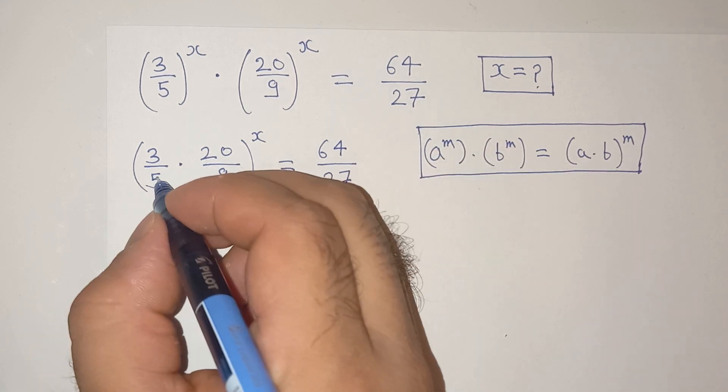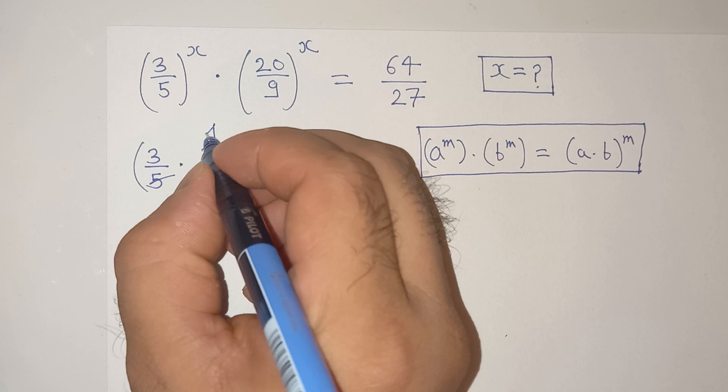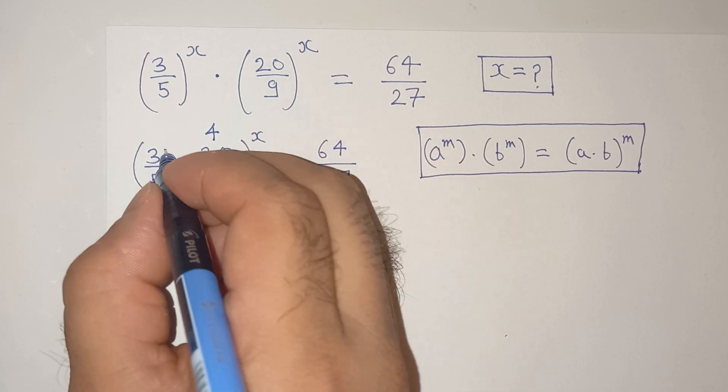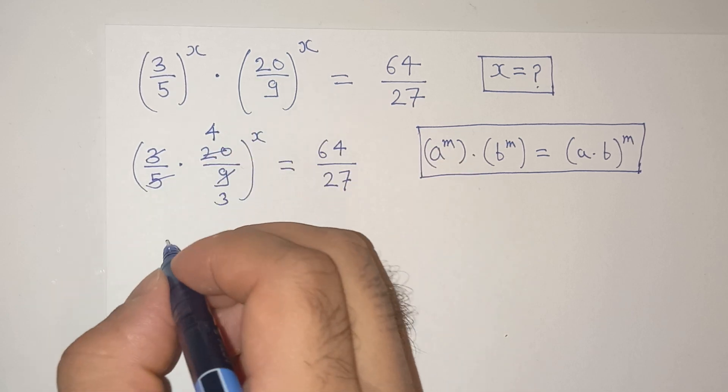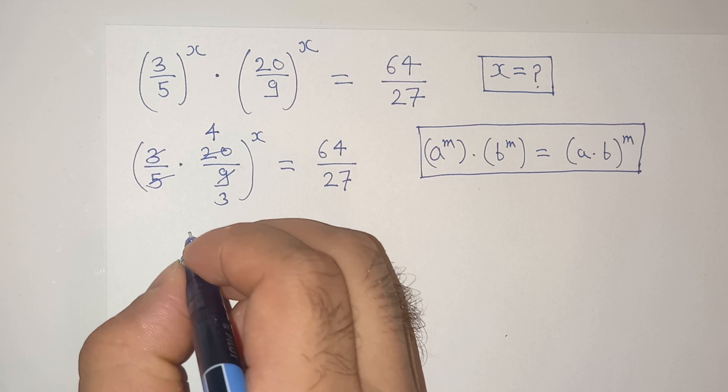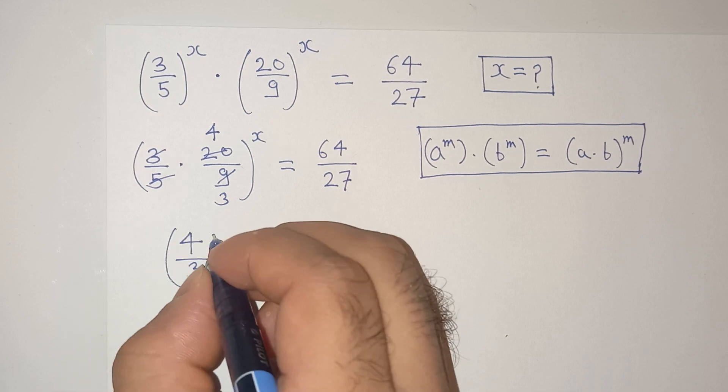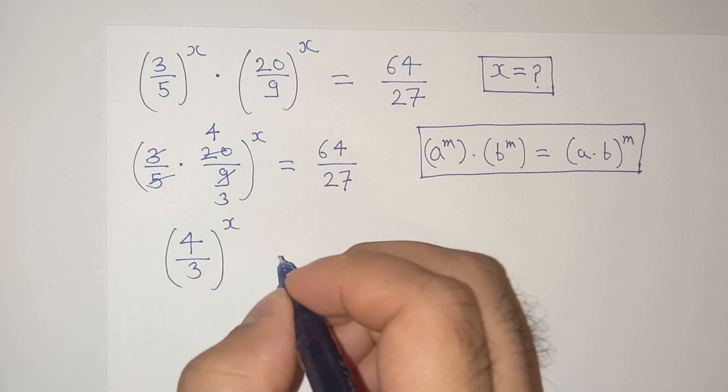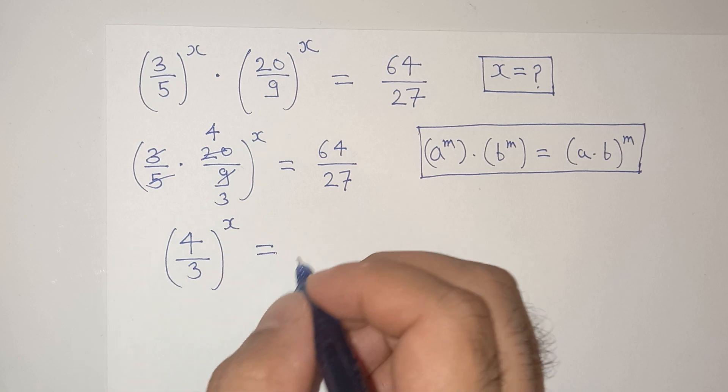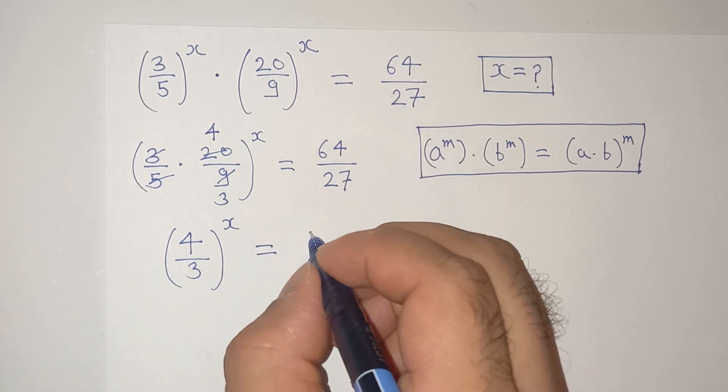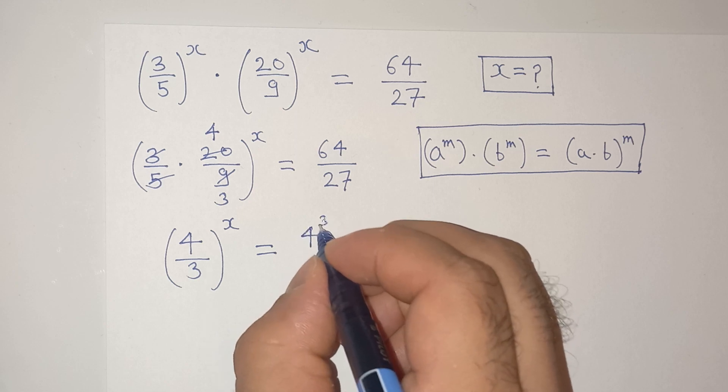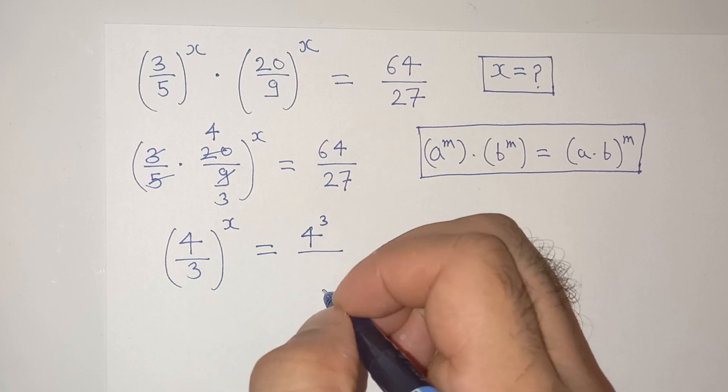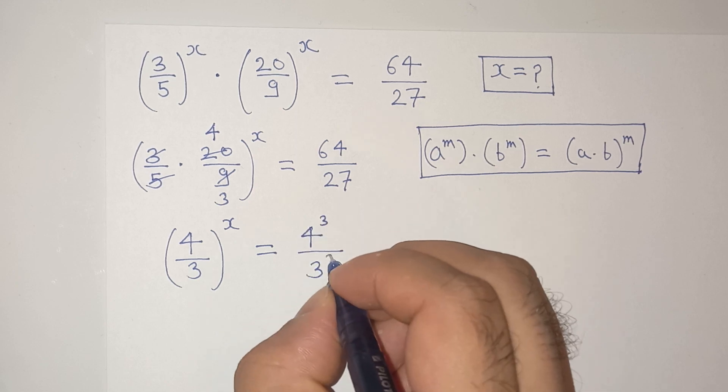Now, 20 divided by 5 is 4 and 9 divided by 3 is 3. So this will be 4 divided by 3 power x equals to... 64 is same as 4 cube and 27 is same as 3 cube.